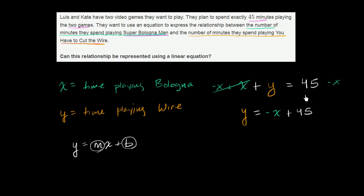All I did is switch these two terms around. But you see here, it has that form. And you might say, wait, what is m here? I see that b is 45. Well, if I write negative x, that's the same thing as writing negative 1x. So this is definitely a line. I was able to write it in this form. So can this relationship be represented using a linear equation? Absolutely, yes.